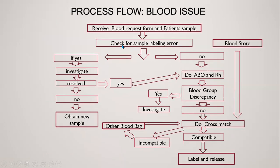Now let us see what is the process flow for blood issue. We receive the blood request form and patient sample, and we check the sample labeling error. If there is a labeling error, it is investigated; if it is resolved we proceed further; if not resolved, we request a fresh sample. If there is no labeling or clerical error, we do ABO grouping and Rh typing of the recipient.